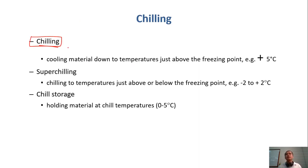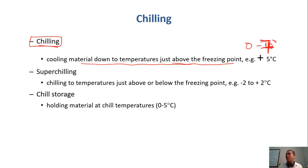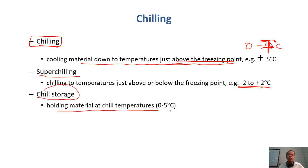What is chilling? Chilling — you can call it refrigeration. It's to cool down the material to a temperature just above freezing point, maybe from 0 to 10 degrees C. You should be in the 0 to 7 degrees C range, still above freezing point, so there is no conversion of water from liquid into solid. There is also a term called superchilling, where the temperature is in the range of minus 2 to plus 2. Chilled storage means holding that material at this lowered temperature during storage.